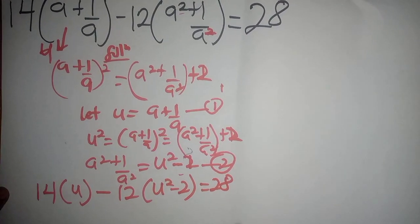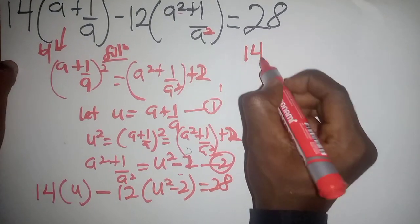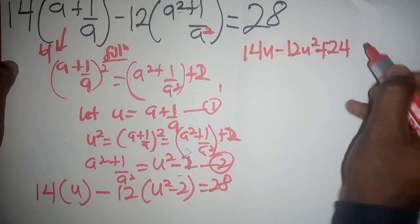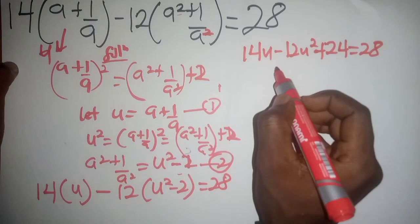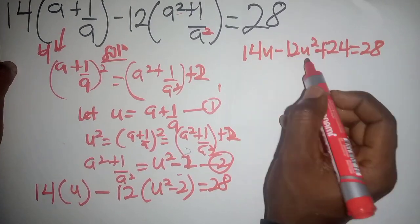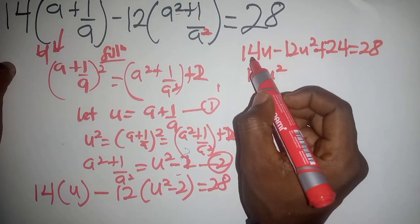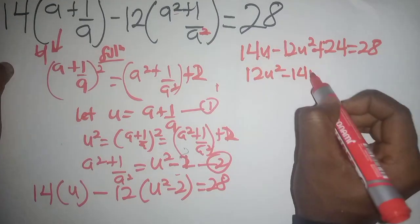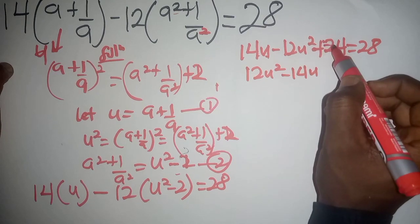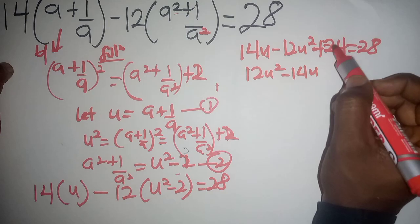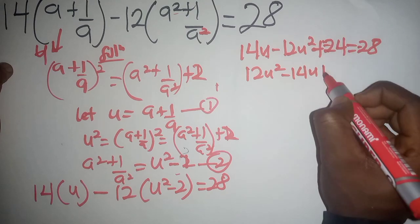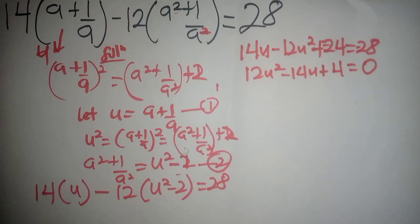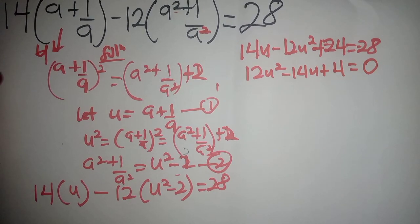Let's further simplify. We have 14u - 12u² + 24 = 28. Grouping and multiplying through by negative one: 12u² - 14u + 4 = 0. So we have a simple quadratic equation.